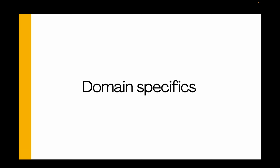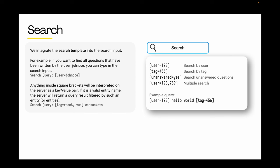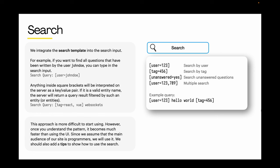Now let's discuss domain-specific aspects, starting with search. Search is a crucial feature for questions and answer sites – simple search by post title isn't very effective. We will integrate a search template into the search input. For example, to find all questions written by user John Doe, you type that in the search input. Anything within square brackets is interpreted on the server as a key-value pair. Considering our main audience is programmers, this method suits us well, and we should include a tips panel to guide users.